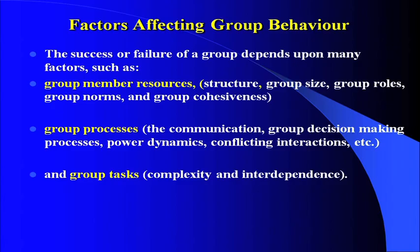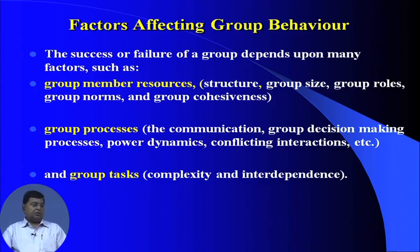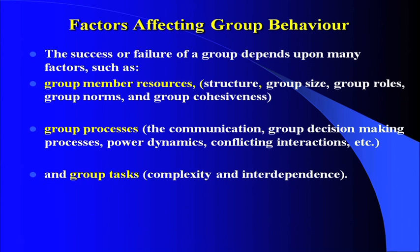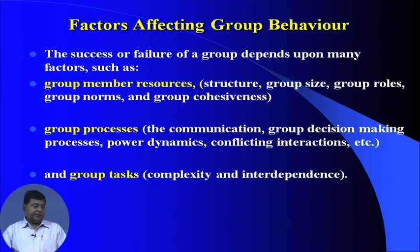Now I would like to discuss the factors affecting group behavior. The success or failure of a group depends on many factors. The important ones are: group member resources — which includes the structure, size of the group, group roles, group norms, and group cohesiveness; group process — which includes the communication process, group decision making, power dynamics, and conflicting interactions; and group tasks — which includes complexity and interdependence.